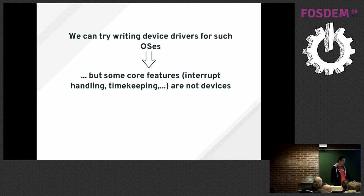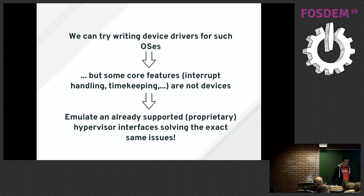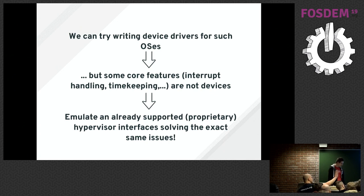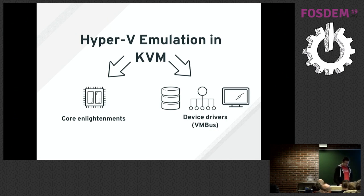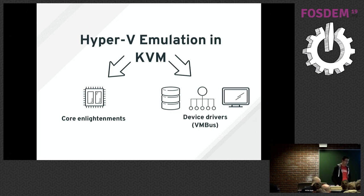We know that KVM is not the only hypervisor out there — there are other proprietary hypervisors, and they have to solve the exact same issues because these hardware interfaces are also slow for them. In the Windows world, this hypervisor is called Hyper-V, and we do emulate Hyper-V in both KVM and QEMU. There are basically two different types of emulation: we emulate core features, which in Hyper-V world are called core enlightenments — and that's why my talk is called Enlightening Hyper-V.